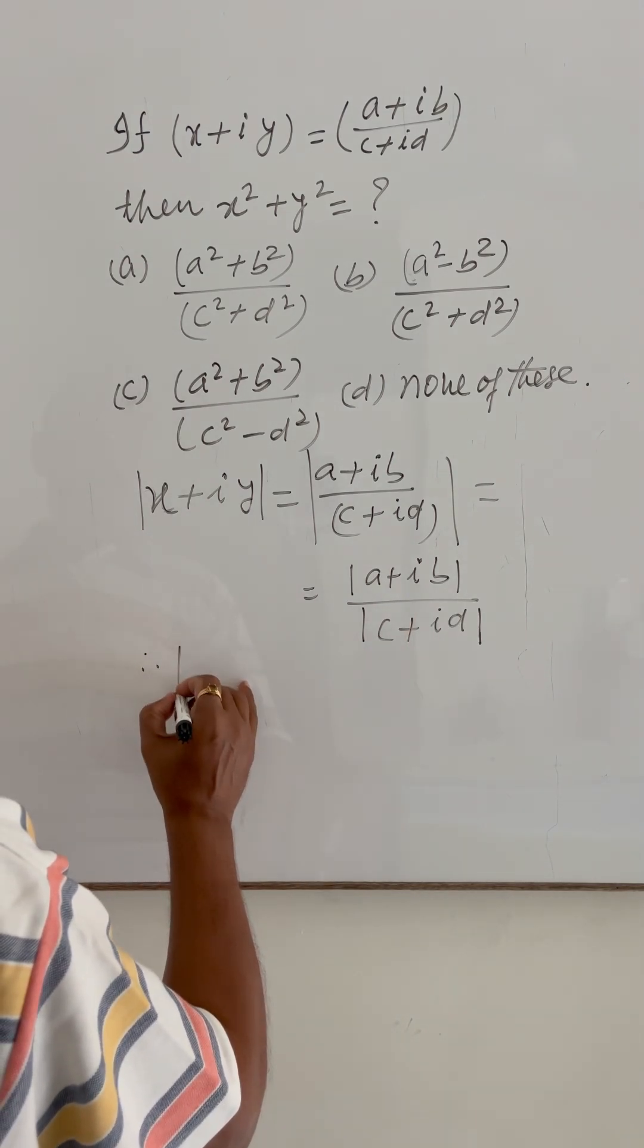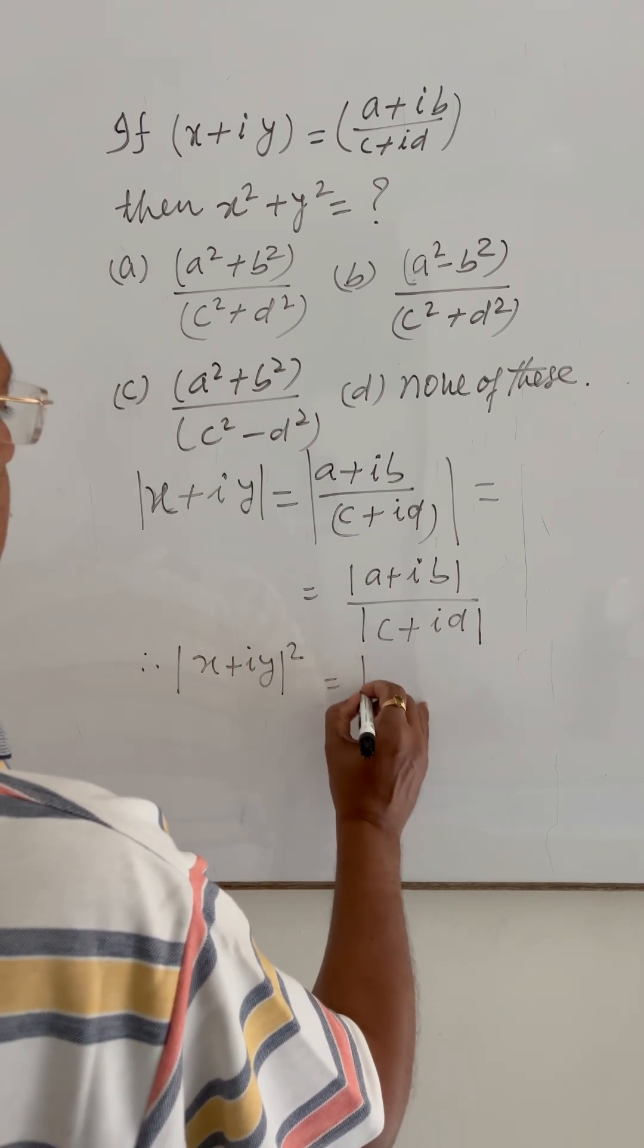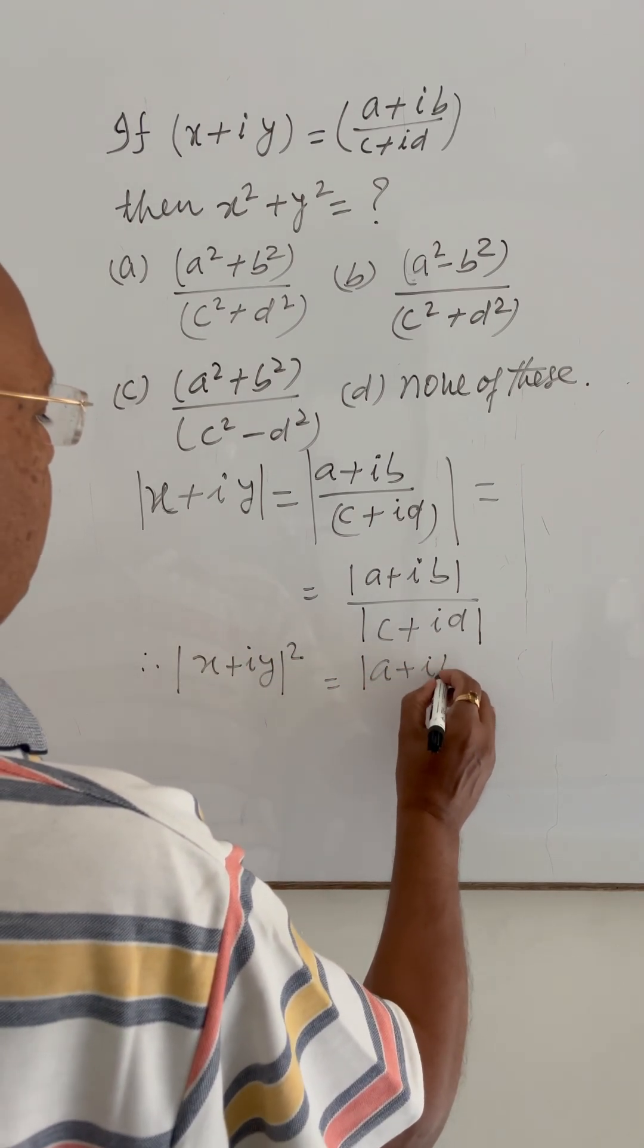squaring both sides: mod of (x plus iy) whole square equals mod of (a plus ib) square